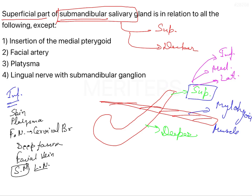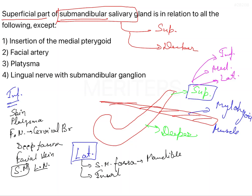The lateral surface of the superficial part of the submandibular gland is related to the submandibular fossa on the mandible, the insertion of the medial pterygoid, and the facial artery. The facial artery is in relation to the lateral surface of the superficial part of the submandibular salivary gland.